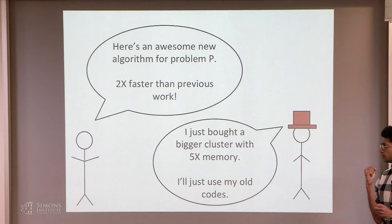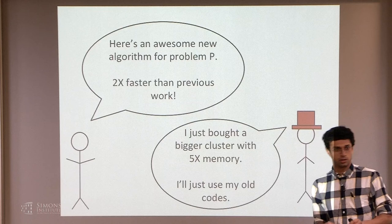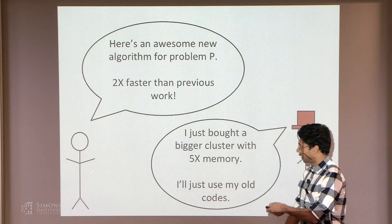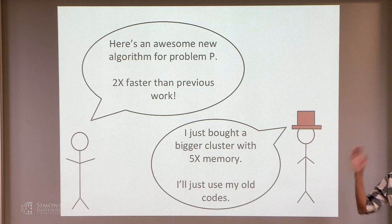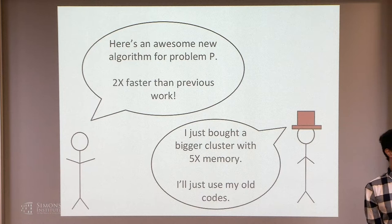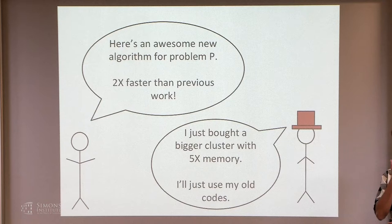Usually as an algorithms person, when I try to work with someone who's applied, I'll talk with them, learn about their problem, think about it, and then say: I have this amazing algorithm for your problem — it's two times faster than previous work, I coded it up, I have nice theory. And the applied person will say: I just bought a cluster with five times more memory, I don't care, I'm just going to use my old code. They've engineered their code so much that a 2x speedup just isn't worth it. That's usually true because there's a lot of effort in engineering and system building which often gives bigger wins than a new algorithmic idea.